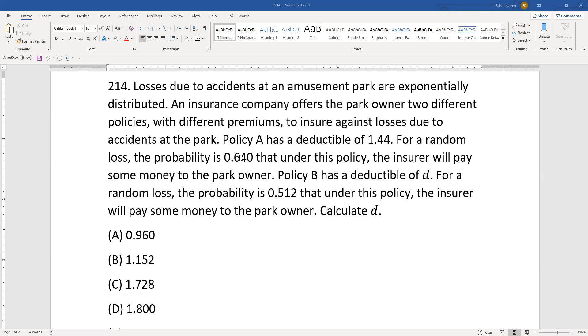is 0.64 that under this policy the insurer will pay some money to the park owner. Policy B has a deductible of d. For a random loss, the probability is 0.512 that under this policy the insurer will pay some money to the park owner. Calculate d. First, since the losses are exponential, the CDF